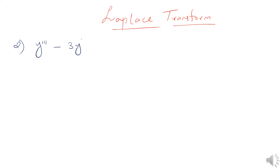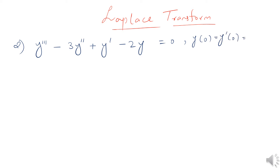The equation is y triple prime minus 3y double prime plus y prime minus 2y equals 0. The given initial conditions are y(0) equals 0, y prime(0) equals 0, and y double prime(0) equals 0. Now we will apply the Laplace transform to the equation.